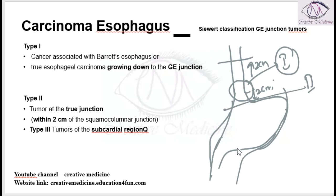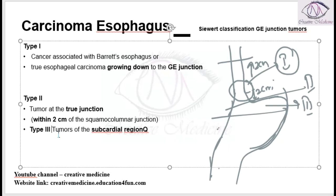Then we have Type 3. In Type 3, the tumor is present in the sub-cardinal region, below the cardia. So this is Type 3.